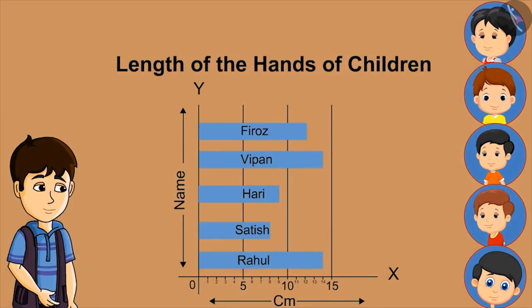By closely looking at this, can anyone tell me who has the longest hands? Rahul and Vipan. How long? 14 cm. Absolutely right.